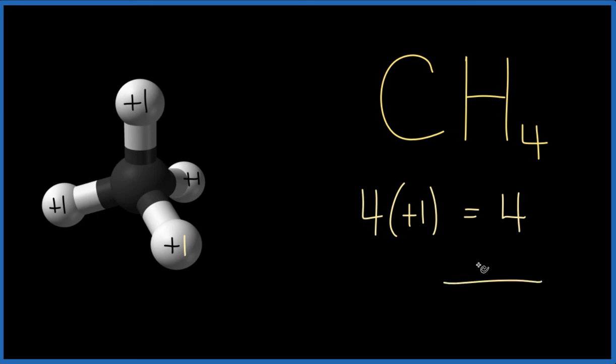We know that 4 plus something is going to give us zero. So we would say 4 plus -4, that would give us zero. That tells us that the oxidation number on this carbon here is -4.